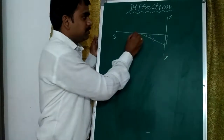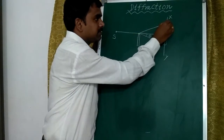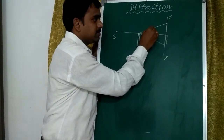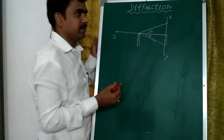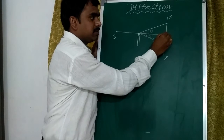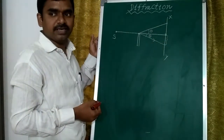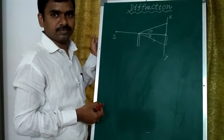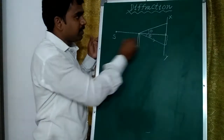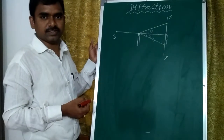The light may also bend in the other direction, so you can also take that as the angle of diffraction. That means from the center the intensity will decrease. This phenomenon is called diffraction.